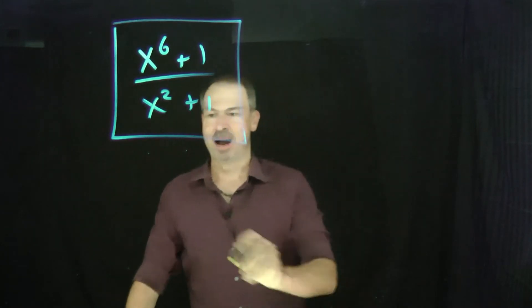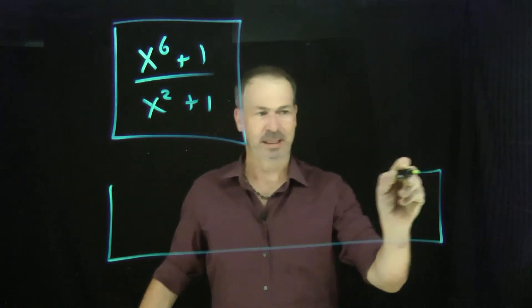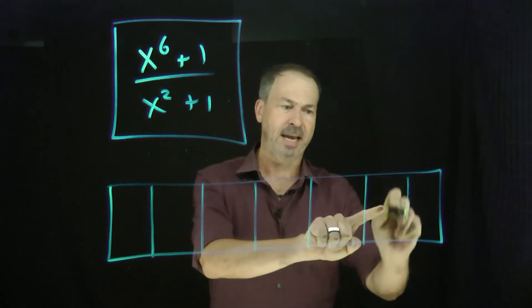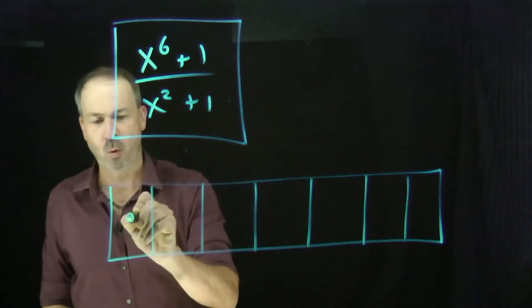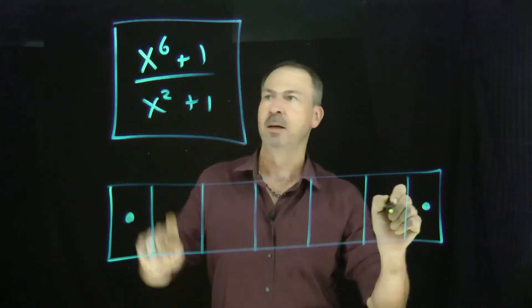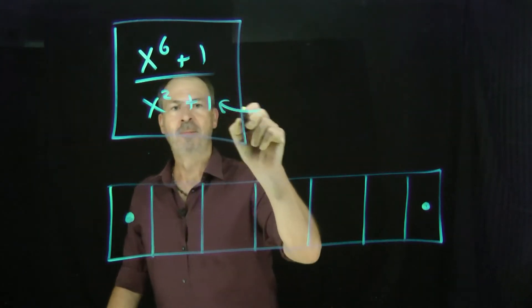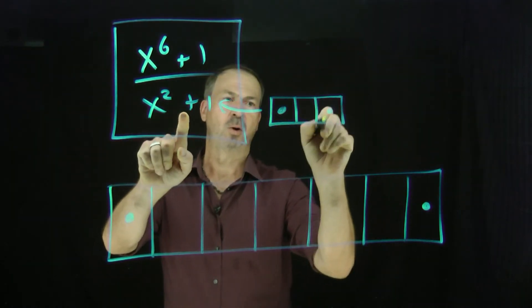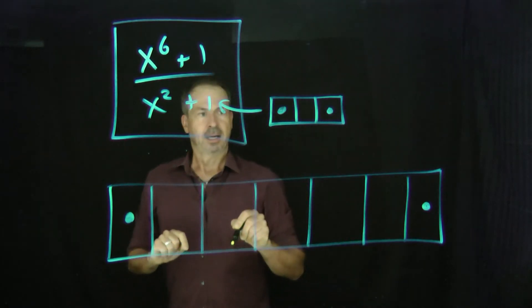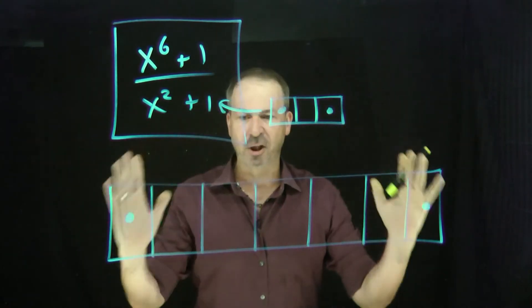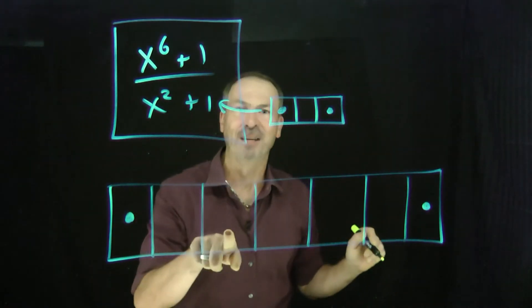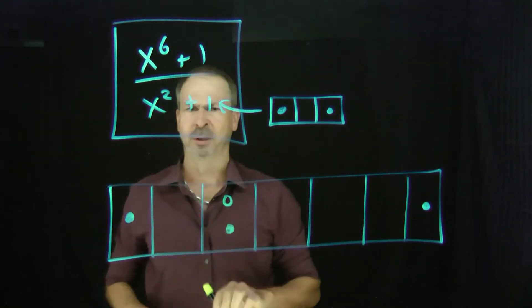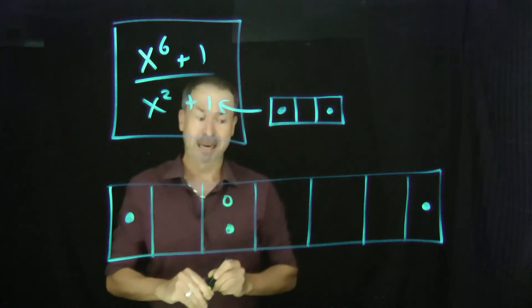Let's try x⁶ + 1 divided by x² + 1. It's going to be a really long set of boxes. x to the sixth, x to the fifth, x to the fourth, x cubed, x squared, x's, and ones. I've got one x⁶ and one there. What am I looking for? I'm looking for this pattern: an x² — no x's — and a one. I'm looking for dot, blank, dot. I don't see it right now. I would love to have a dot there because that would give me that pattern — make it happen. Do all the consequences, because that box is meant to be empty, but I've kept it empty.